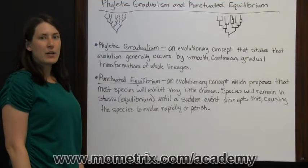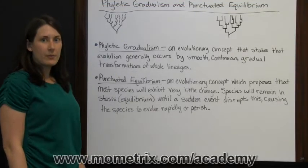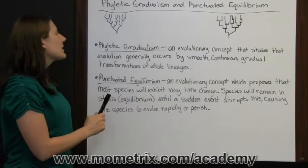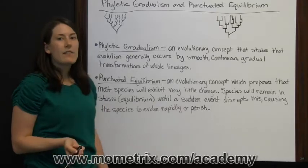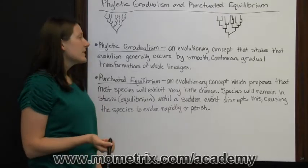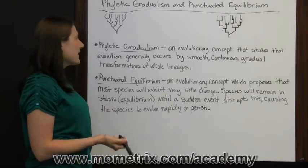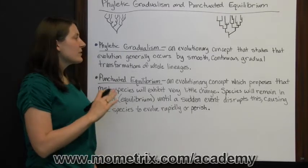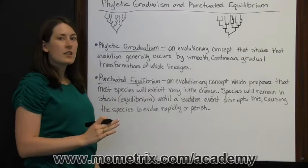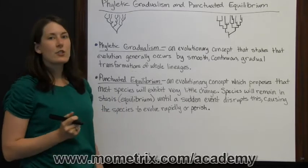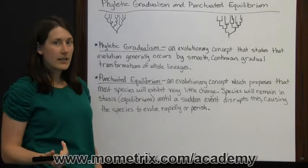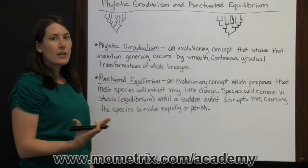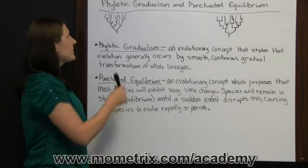Phyletic gradualism and punctuated equilibrium. Phyletic gradualism is an evolutionary concept that states that evolution generally occurs by smooth, continuous, gradual transformations of whole lineages. It happens slowly over time.